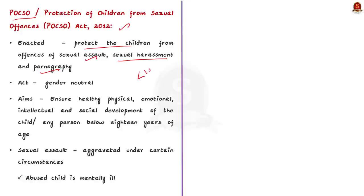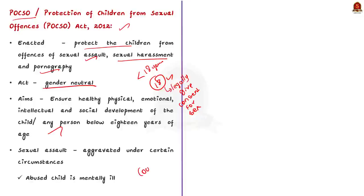Currently in India, regardless of gender, the age of consent is 18 years according to the POCSO Act. The age of consent is the age at which a person can legally consent to a sexual act. So the Act is gender neutral and aims to ensure the overall development of a child below 18 years of age. POCSO also provides for the establishment of special courts to try offenses under the Act. The Act defines different forms of sexual abuse, including penetrative and non-penetrative assault, as well as sexual harassment and pornography.